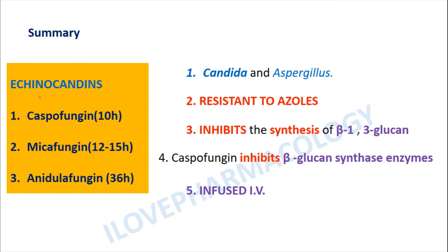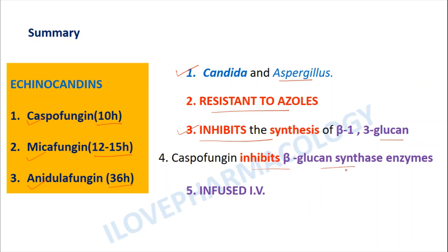In summary, the echinocandins — caspofungin, micafungin, and anidulafungin — differ in their plasma half-lives: caspofungin 10 hours, micafungin 12 to 15 hours, and anidulafungin 36 hours. They are mainly indicated for candidal and aspergillus infections, including azole-resistant candidal infections. Their mechanism of action is inhibition of beta-1,3-glucan synthesis via beta-glucan synthase enzyme inhibition, and their primary route of administration is intravenous.